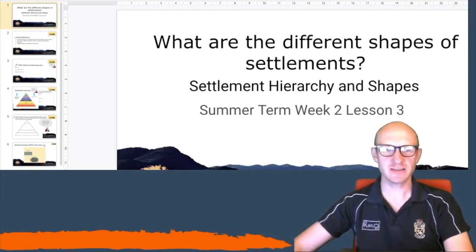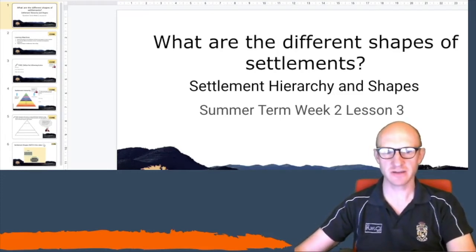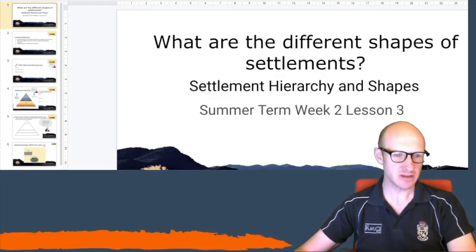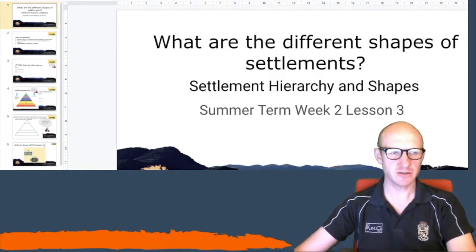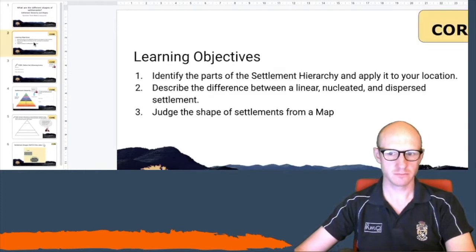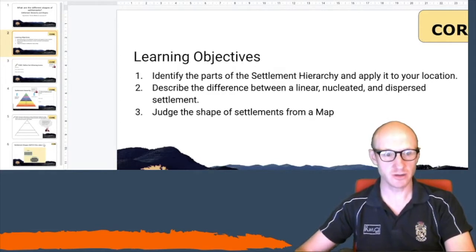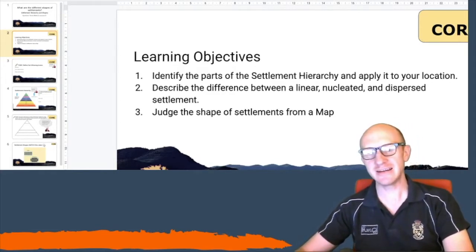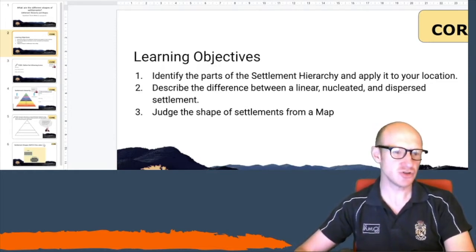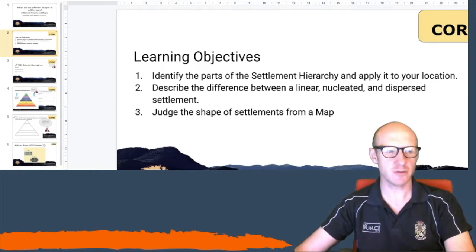Hello, so in today's lesson we're going to be looking at what are the different shapes of settlement, thinking about the shapes and the hierarchy as well. Your learning objectives today are: you're going to identify the parts of the settlement hierarchy and apply it to your location. You're going to describe the difference between linear, nucleated and dispersed settlement, and you're going to be able to judge the shape of settlements from a map.